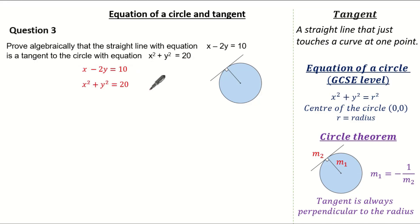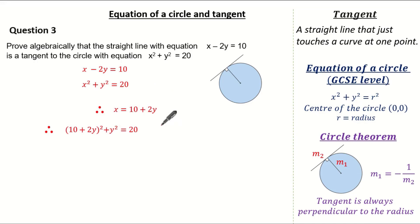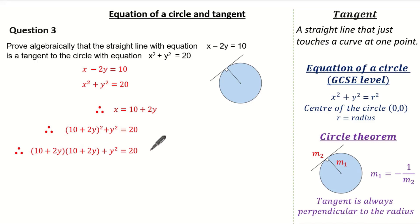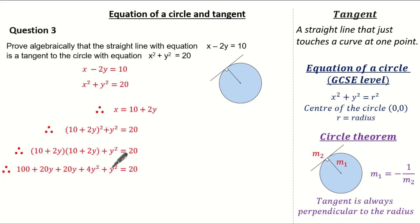Rearranging gives x equals 10 plus 2y. Substituting into the circle equation, we have (10 plus 2y) all squared plus y squared equals 20. Expanding the double brackets: 10 times 10 is 100, 10 times 2y is 20y, 2y times 10 is 20y, and 2y times 2y is 4y squared. Adding y squared and equating to 20, then collecting like terms gives the quadratic 5y squared plus 40y plus 100 equals 20.